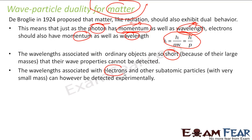The wavelength associated with electrons and other subatomic particles with very small mass can however be detected experimentally. The wavelength is inversely proportional to mass. So if mass is more, the wavelength is very less. If mass is less, the wavelength is more, so it can be detected experimentally.